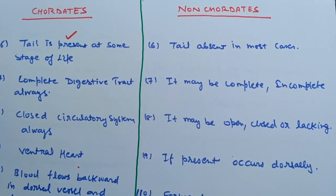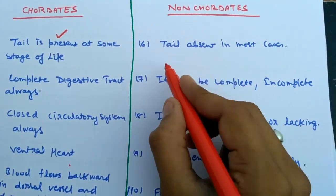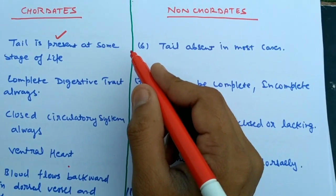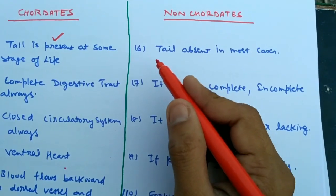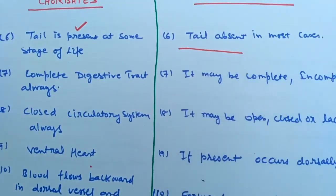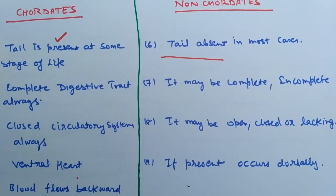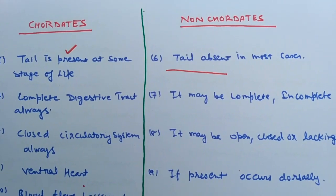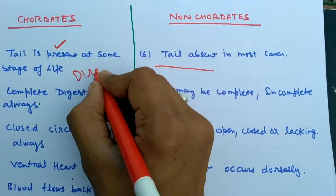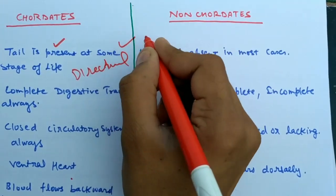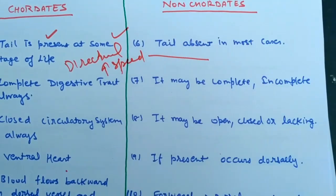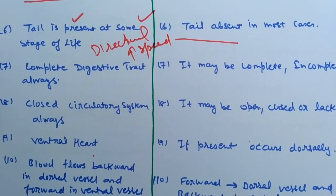The next difference is the tail. In chordates, a tail occurs at all stages of life, or it may be absent in some stages — for example, the adult frog has no tail, but the larval tadpole does. In non-chordates, there is no tail. In fishes, birds, and reptiles, the tail provides directional character and increases the speed of the animal.